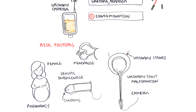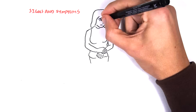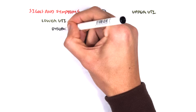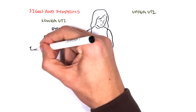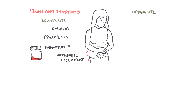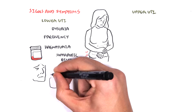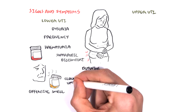The signs and symptoms of UTI depend on whether it is a lower or upper urinary tract infection, with upper being more severe. Lower urinary tract infections cause dysuria — pain upon urination — frequency, hematuria — blood in urine — suprapubic discomfort, and a burning urgency sensation with urination. The urine is often described as cloudy and having an offensive smell.